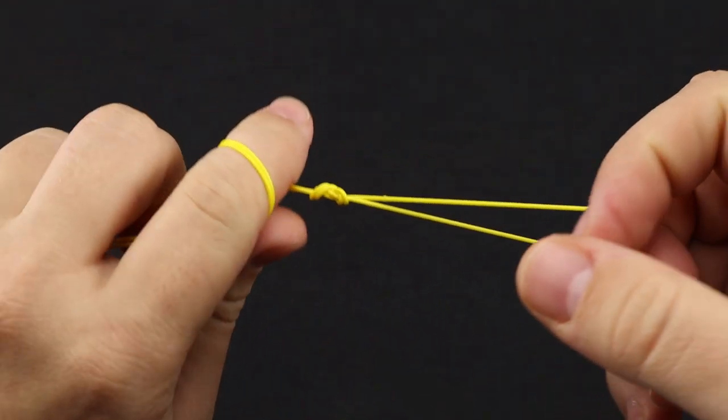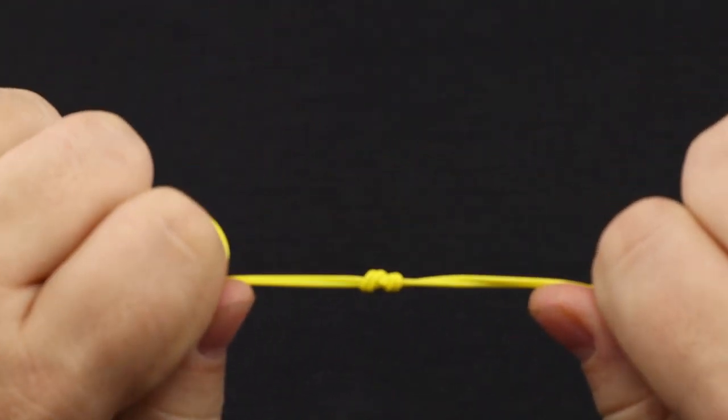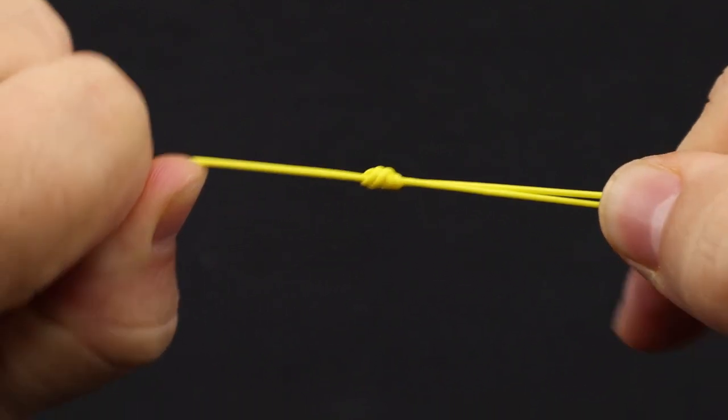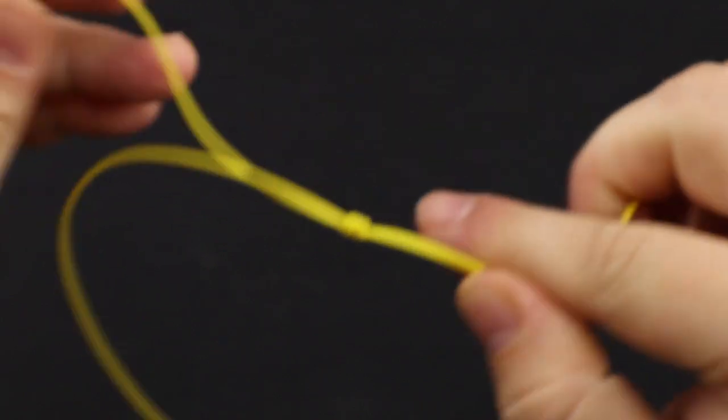Okay, now grab a hold to the left and the right, and give that a really nice tug. Now what you're left with is a tag end to cut off.